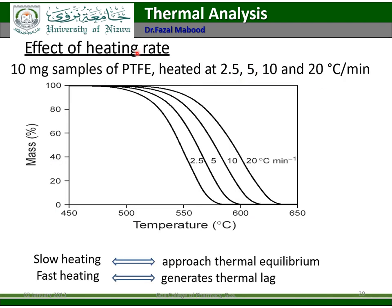Effect of heating rate: at heating rates of 2.5, 5, 10, and 20°C/min, the shape of the TGA curve changes. A slow heating rate approaches thermal equilibrium, while a fast heating rate generates thermal lag.